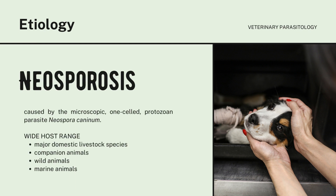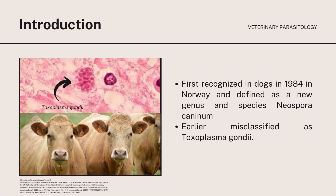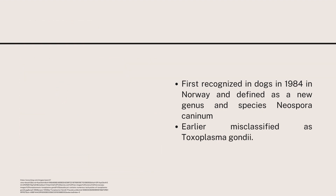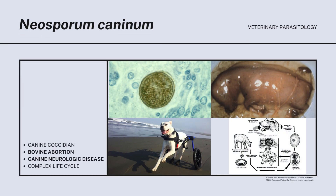Neosporosis is caused by the microscopic one-celled protozoan parasite. In a healthy dog, contracting neosporosis may not have any symptoms and your dog may just be a carrier of the parasite. The illness is usually seen in puppies who contract neosporosis from their mother. It was first recognized in dogs in 1984 in Norway and defined as a new genus and species Neospora caninum. It is structurally and biologically similar to Toxoplasma gondii, and until 1988 it was commonly misdiagnosed as such. Neospora caninum is one of the most common causes of bovine abortion, especially in intensively farmed cows.